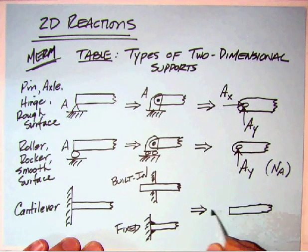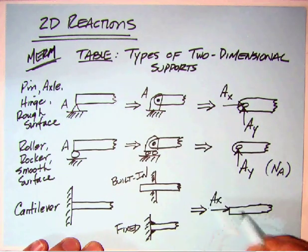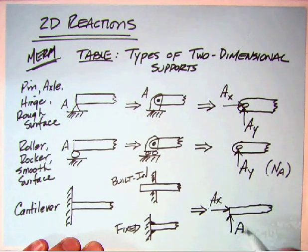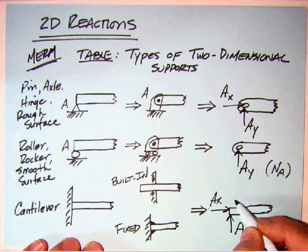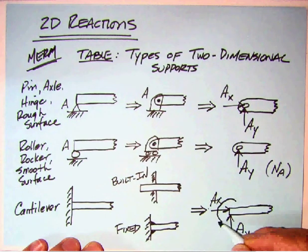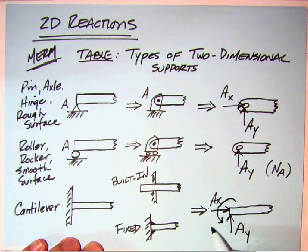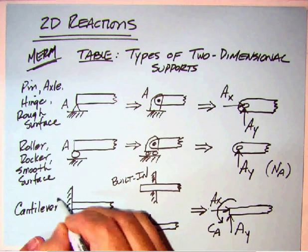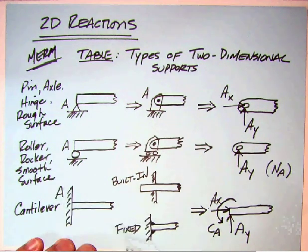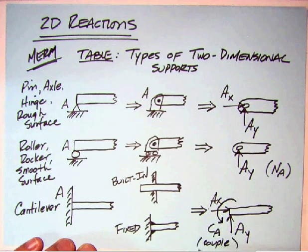For this particular one, we have just the beam here going out, and so we've got our AX and our AY. So it resists both vertical and horizontal motion, but the cantilever also has a third reaction, and I typically call this C sub A, because again, this is point A back here,